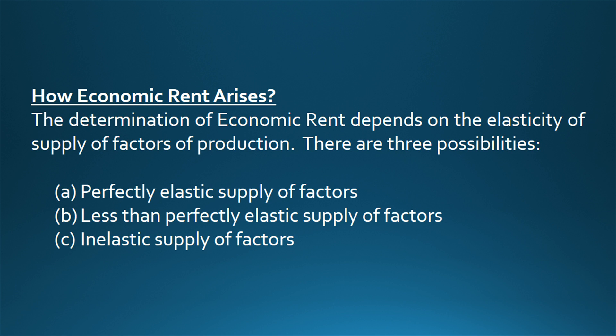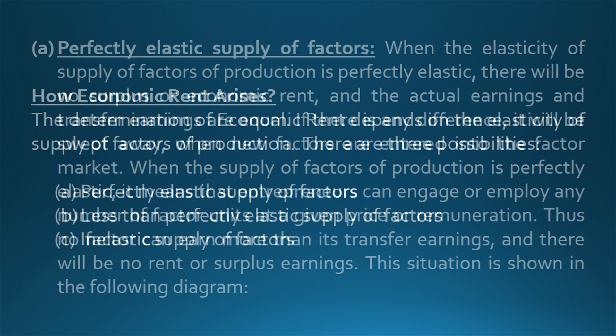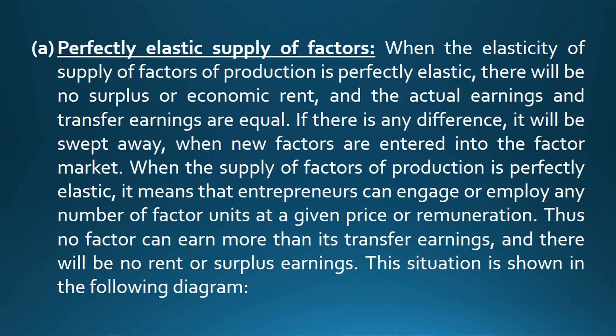How does economic rent arise? The determination of economic rent depends on the elasticity of supply of factors of production. There are three possibilities: (a) perfectly elastic supply of factors, (b) less than perfectly elastic supply of factors, and (c) inelastic supply of factors. When the elasticity of supply of factors of production is perfectly elastic, there will be no surplus or economic rent, and the actual earnings and transfer earnings are equal. If there is any difference, it will be swept away when new factors enter the factor market. This situation is shown in the following diagram.